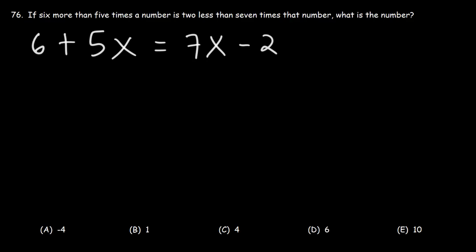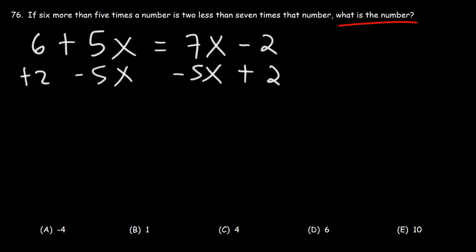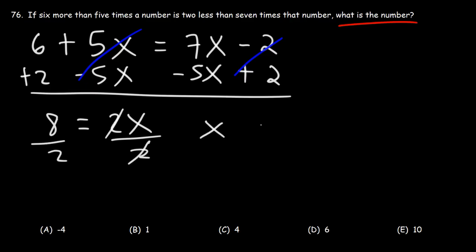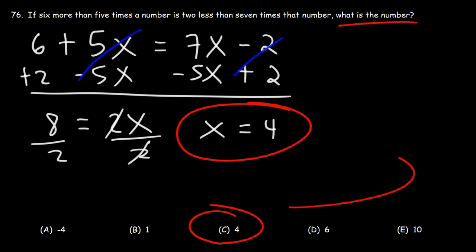So we have the equation 6 + 5x = 7x − 2. We need to calculate x. Adding 2 to both sides and subtracting 5x from both sides: 6 plus 2 is 8, and 7x minus 5x is 2x. So 2x = 8. Dividing both sides by 2, x = 8 ÷ 2 = 4. So C is the correct answer.